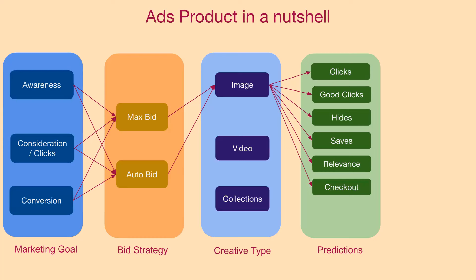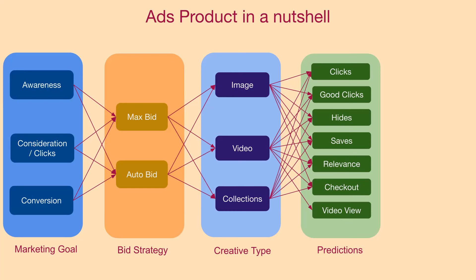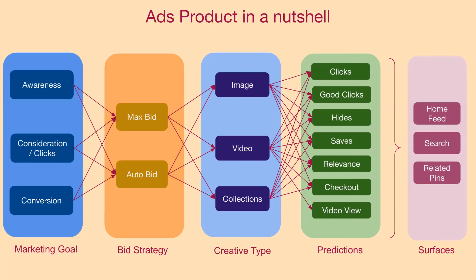To understand user behavior, there are other kinds of predictions the platform makes around good clicks, hides, saves, and relevance in general. For each of these machine learning objectives, you can have different models to maintain. The complexity keeps growing — you can have other awareness goals or marketing goals from advertisers, driving content not only on Pinterest but outside the platform. Adding more creative types like videos and collections further increases model complexity.